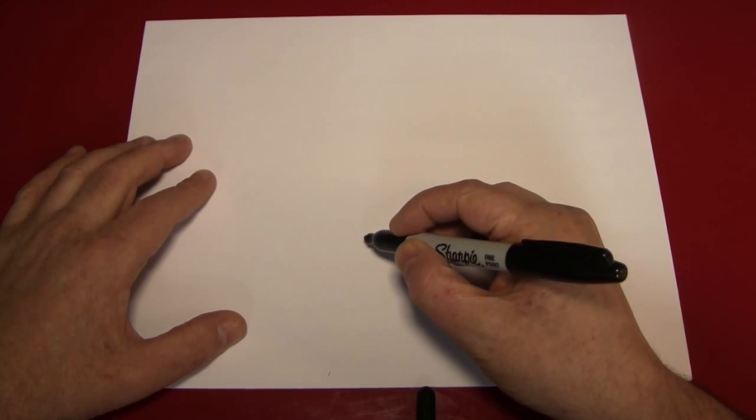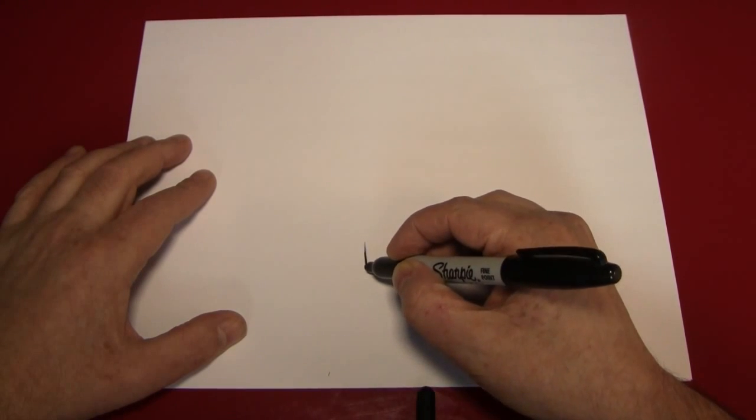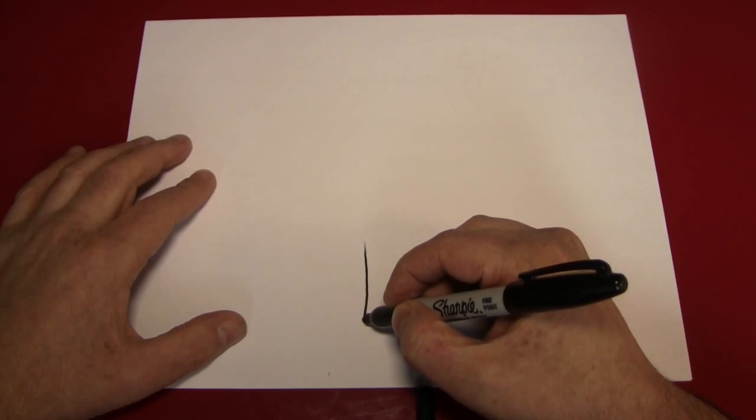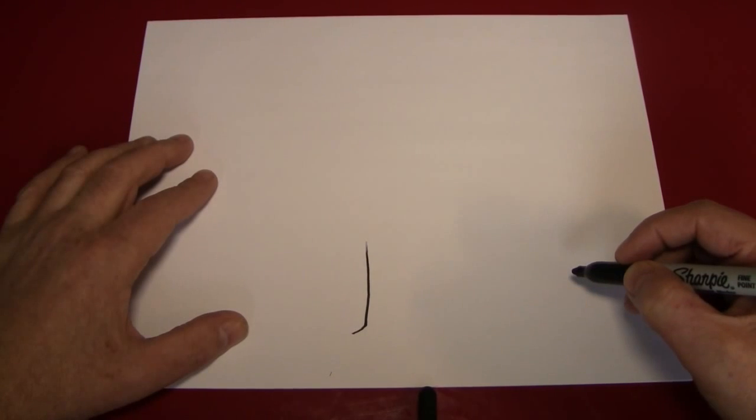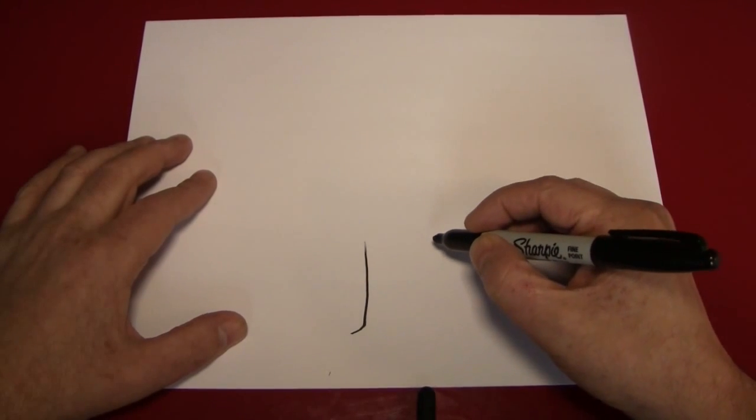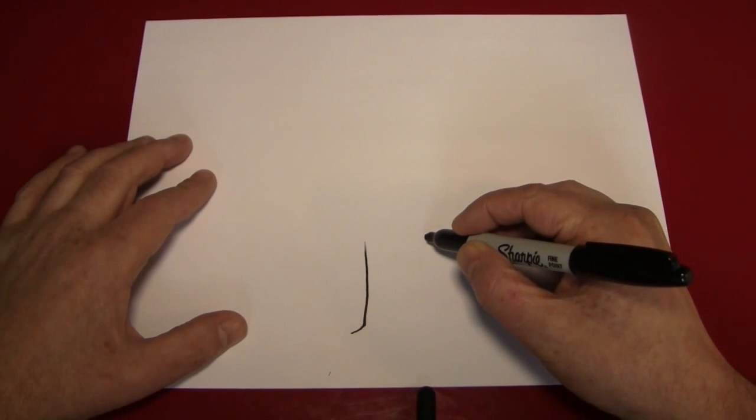You're going to start by making one line, and it doesn't have to be a straight line, but at the very end it should curve to the left. Now do the same thing on the other side, but at the bottom curve to the right.